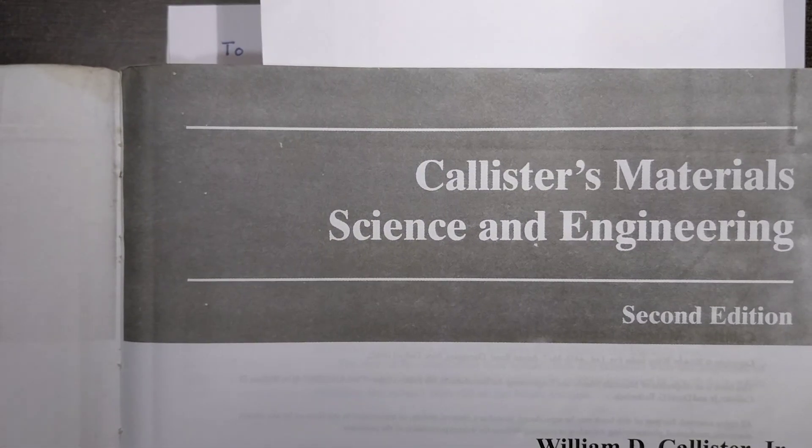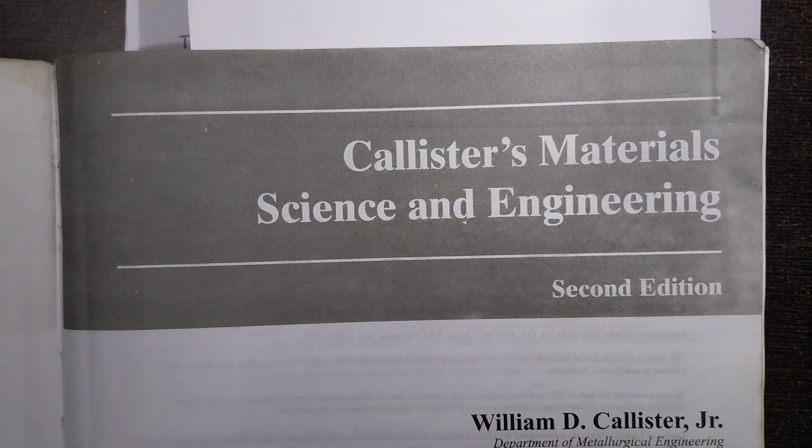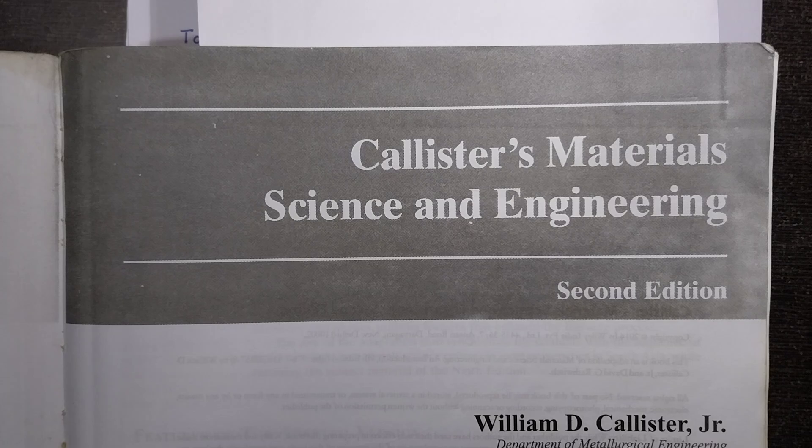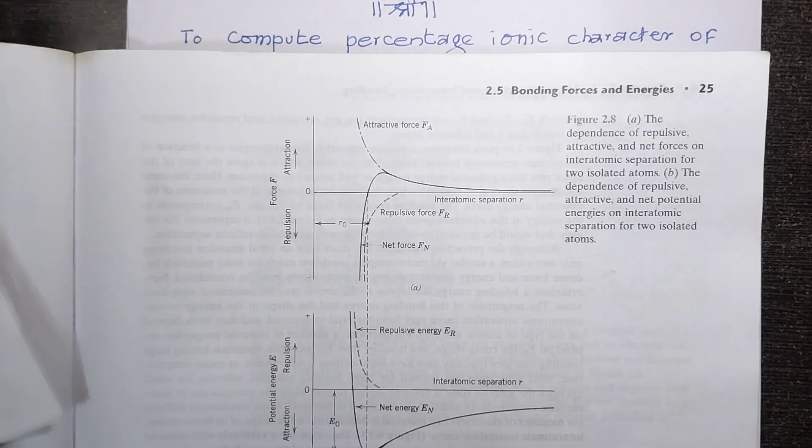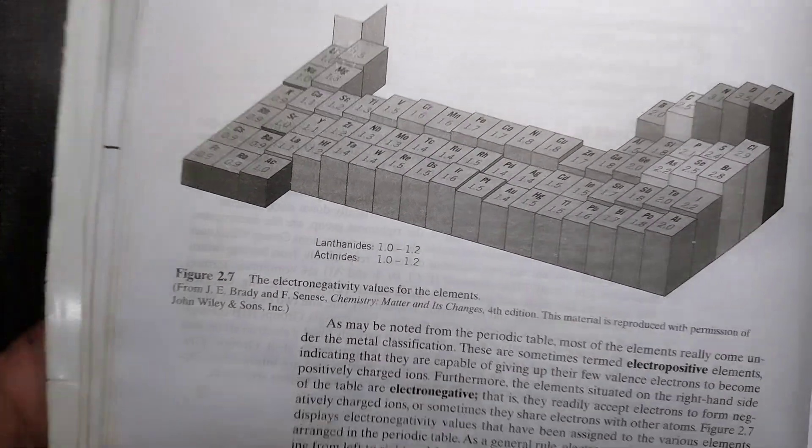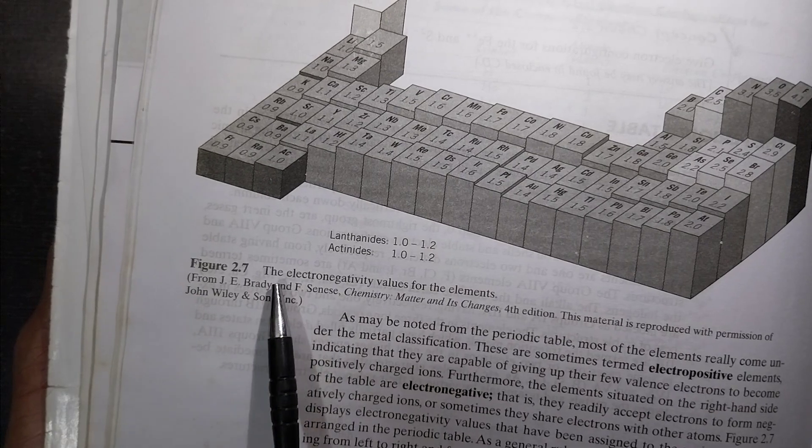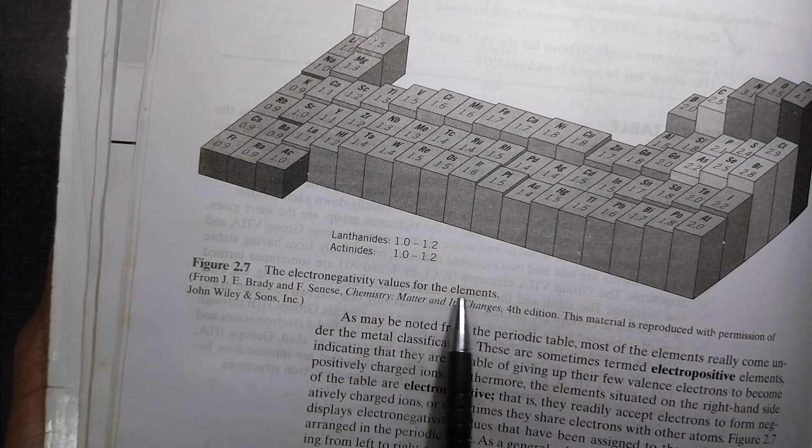I am going to refer here this book which is Callister's Material Science and Engineering. This is second edition. In this book there is figure 2.7 as has been mentioned here, the electronegativity values for elements.